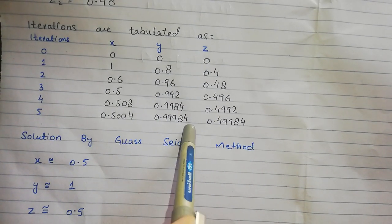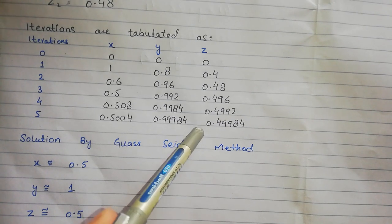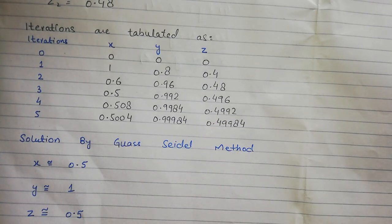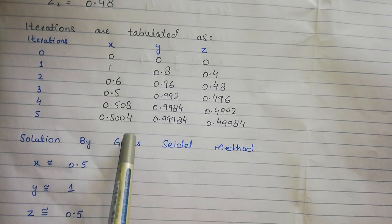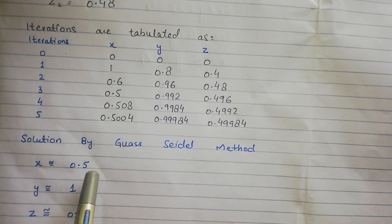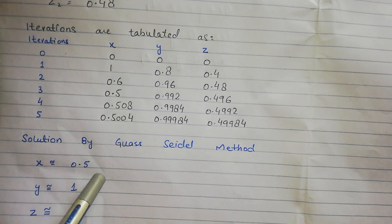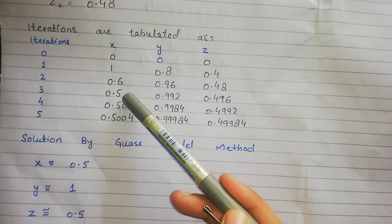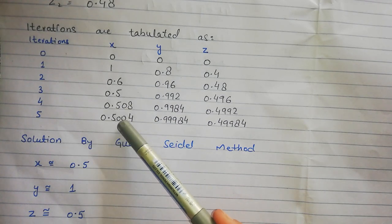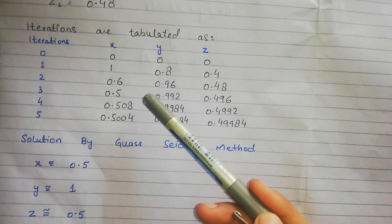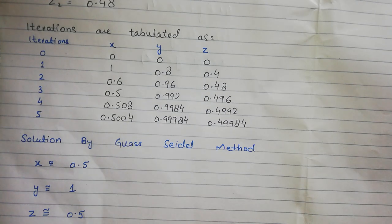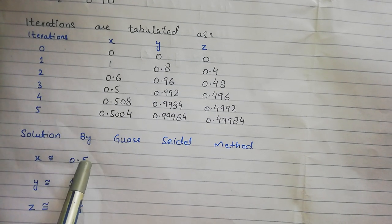Now, looking at the X values across all iterations: 1, 0.6, 0.5, 0.5, 0.5. Since 0.5 is the repeating value, the approximate value of X is 0.5.